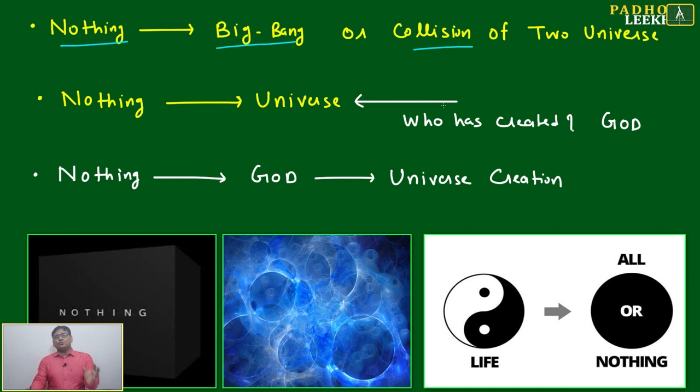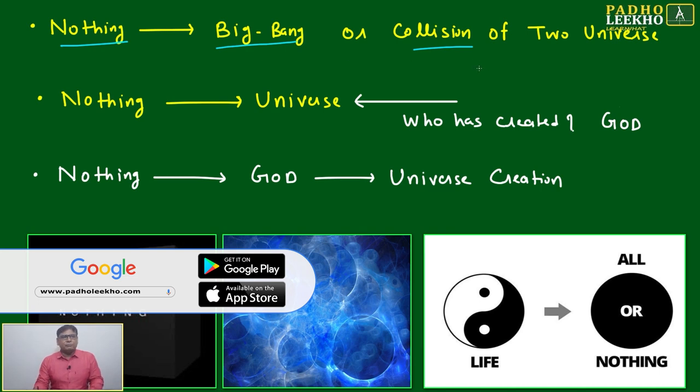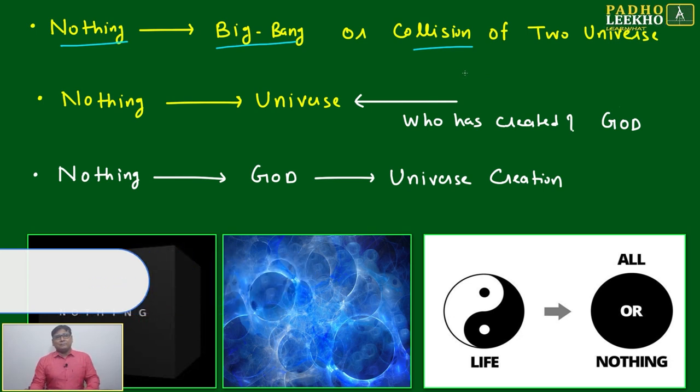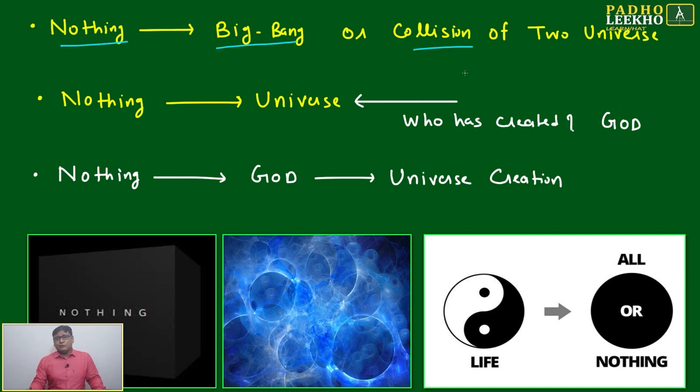Only we know after Big Bang or collision of two universes - these two theories are there about how the universe came in picture, who has created the universe, how universe was created. Big Bang and collision of two universes - these two theories themselves are contradictory. Big Bang - they don't have any data before the explosion. They are only telling sudden explosion happened and everything is created. As a science student or mathematics student, nobody will be able to accept it.